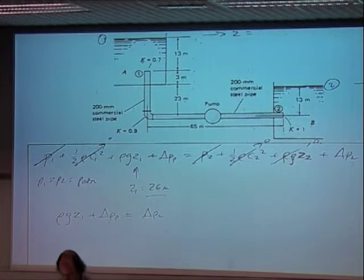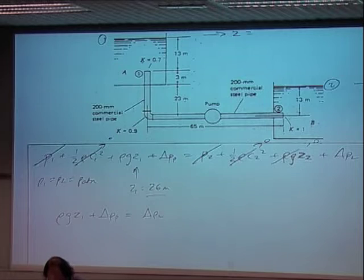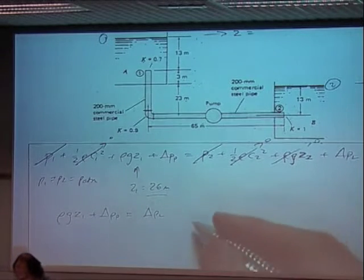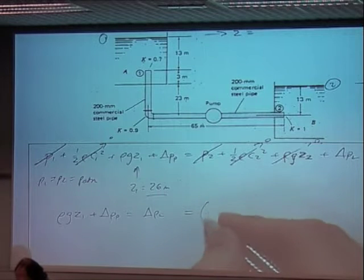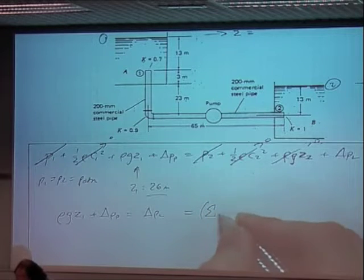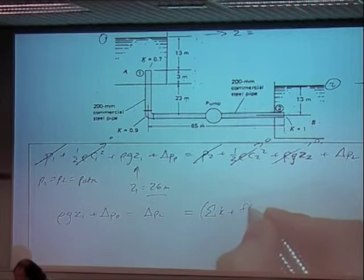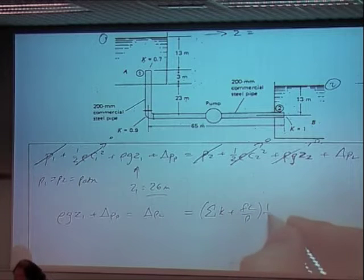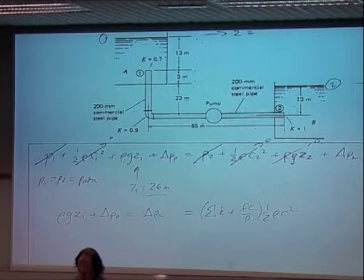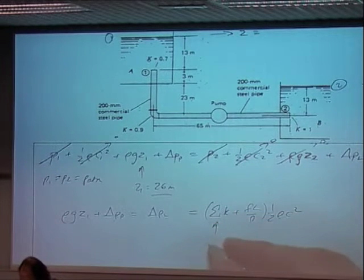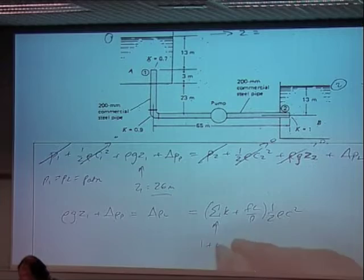And so here's our Bernoulli's equation as it applies in this case, PP equals delta PL. So delta PL, we know delta PL equals, it's going to be the sum of all the k values plus fL upon D times by one half rho C squared. Now the sum of all the k values, that's easy.